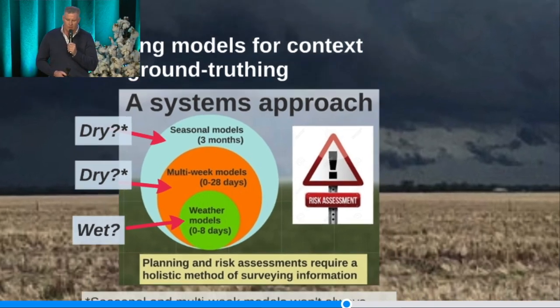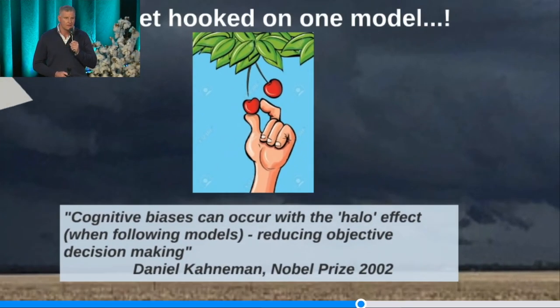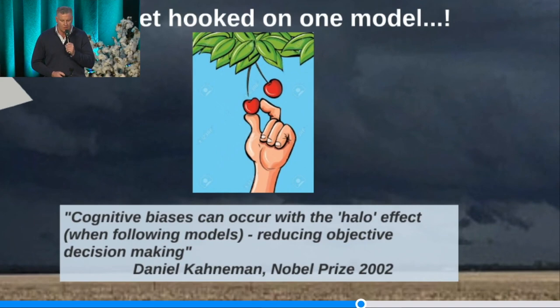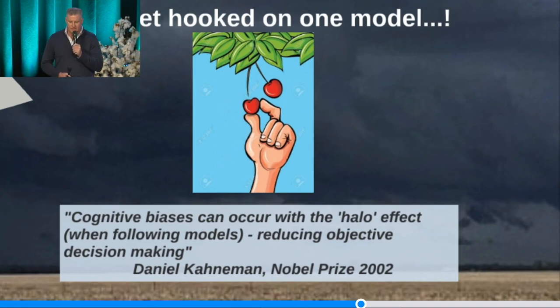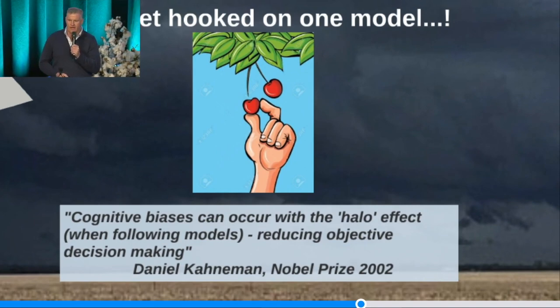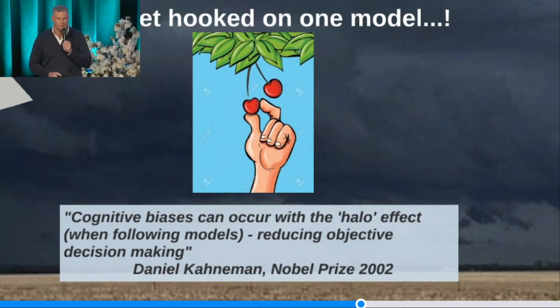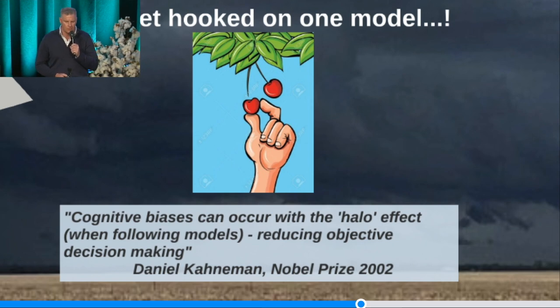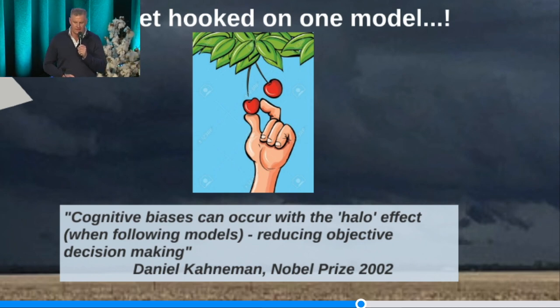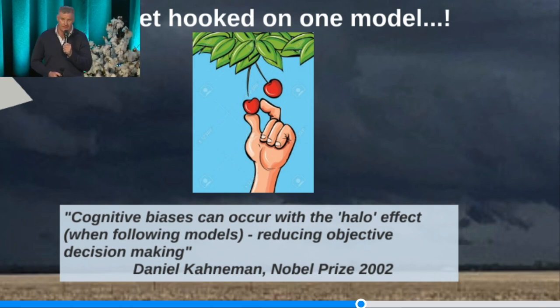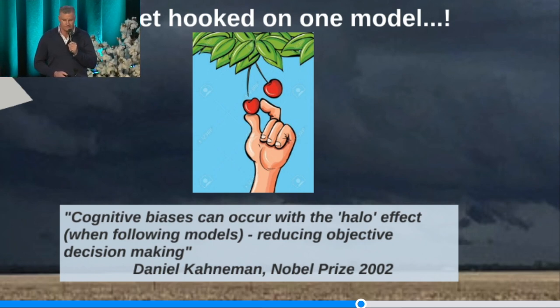Don't get hooked on one model. Cherry-picking models — cognitive biases can occur, certainly with the halo effect, saying this model's going to deliver me all the time. There will be occasions where they will let you down. That's for sure.